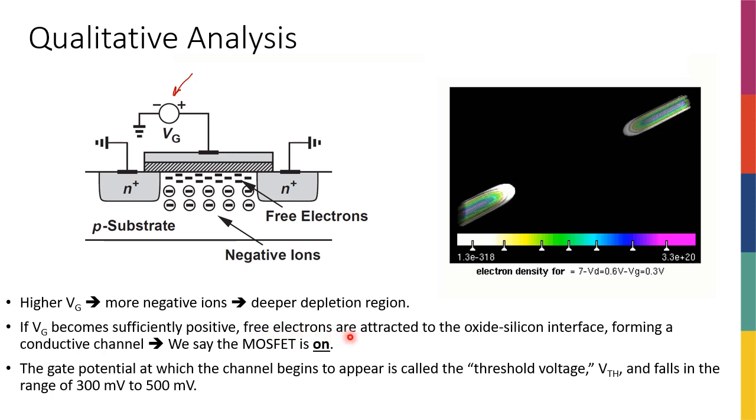And then what happens is that if I increase VG enough, so basically if VG becomes sufficiently positive, free electrons are attracted to the gate, to the oxide silicon interface, basically the area right under the gate, forming a conductive channel. So I'm going to have first some negative charges here, some negative charges here, and then as I increase VG, I'm going to have more and more of these negative charges on the two sides, and then at a certain voltage that I apply to VG, which I'm going to call that the threshold voltage, the two sides are going to be basically attached to each other.